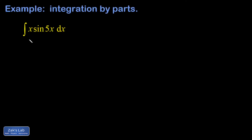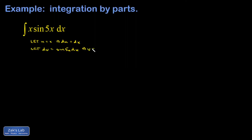This is a pretty standard integration by parts — we're going to choose a u that gets simpler when we differentiate. Let u equal x, so du equals dx. Let dv equal sine 5x dx, which means v is negative one-fifth cosine 5x, just guessing the chain rule backwards.